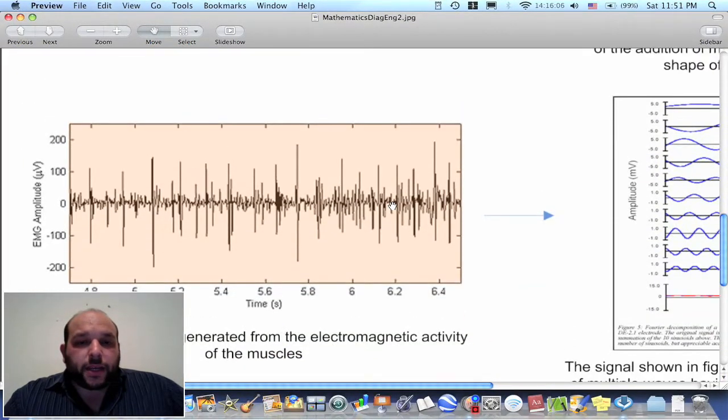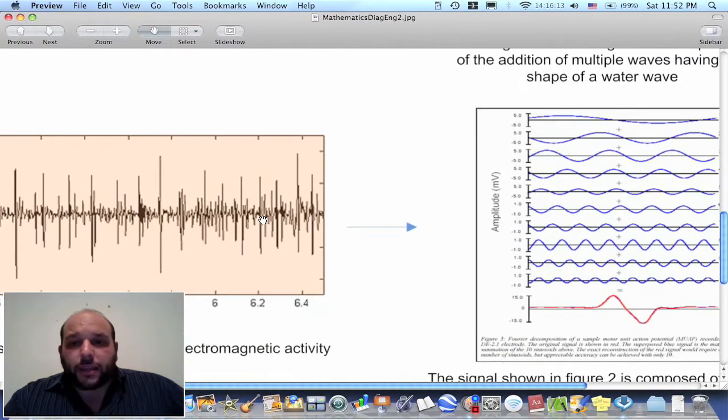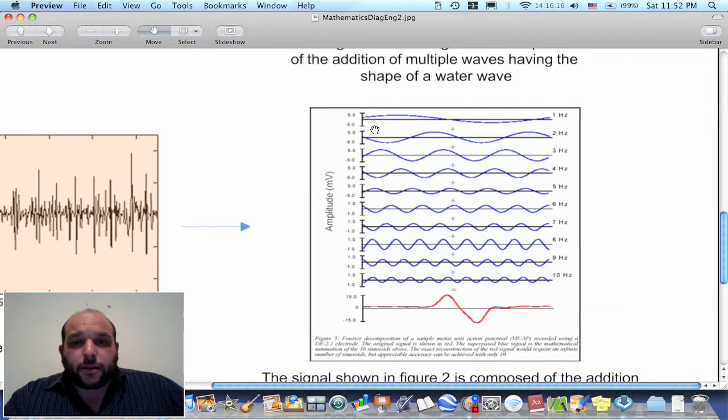Another signal, this is the one obtained from the electromagnetic activity of muscles. When your muscles contract, the signal produces this one. And this signal is simply the addition of these sine waves, the shape of water waves, as Allah tells us in the Quran, that he has made from water every living thing.